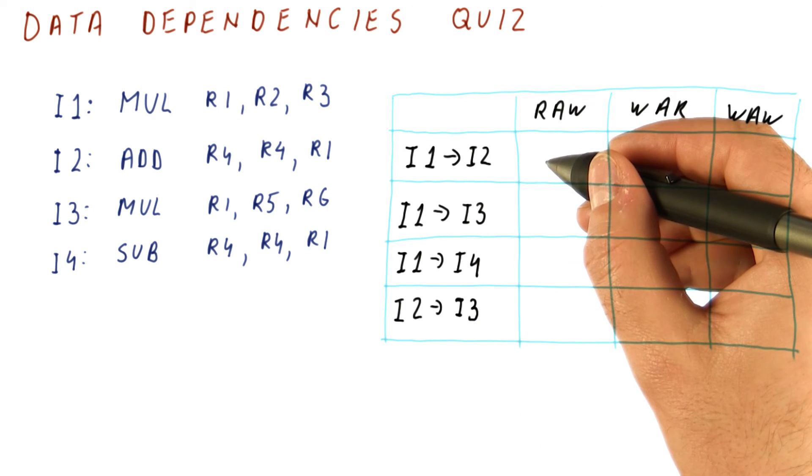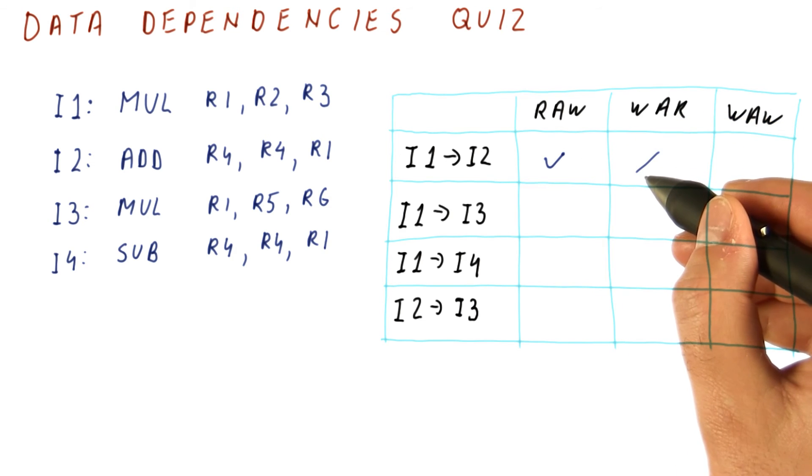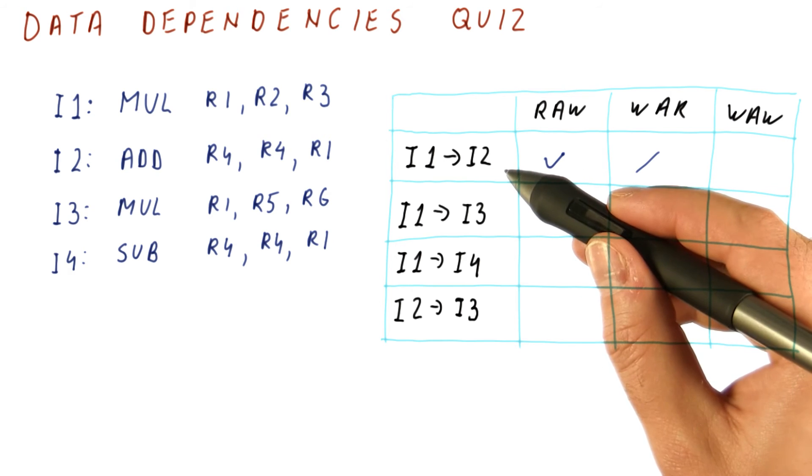To help you out, I'm going to tell you that there is a read after write dependence here, that there is no write after read dependence from I1 to I2, and that there is no write after write dependence.